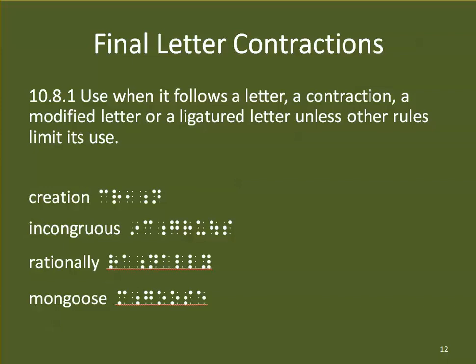That's it for initial letter contractions. Final letter contractions are the ones that have dots 4-5. We no longer use dot 6-N or dot 6-Y, so we have fewer final letter contractions than before. We can use them when they follow a letter, a contraction, or a modified or ligature letter, unless other rules limit its use. A final letter contraction must follow a letter of some kind — it cannot follow indicators or symbols.